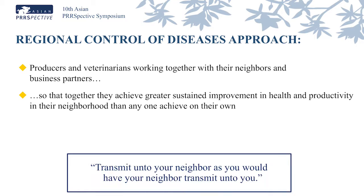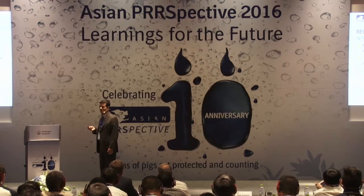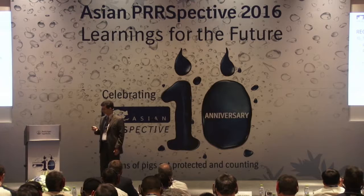So in order to really control PERS, we need to go beyond and start working with programs of regional control. The regional control of PERS means that all producers and veterinarians working in a given area will work together looking for the commonwealth — that is the basic idea. As Dr. Dale Paulson would say: transmit onto your neighbor as you would have your neighbor transmit onto you.